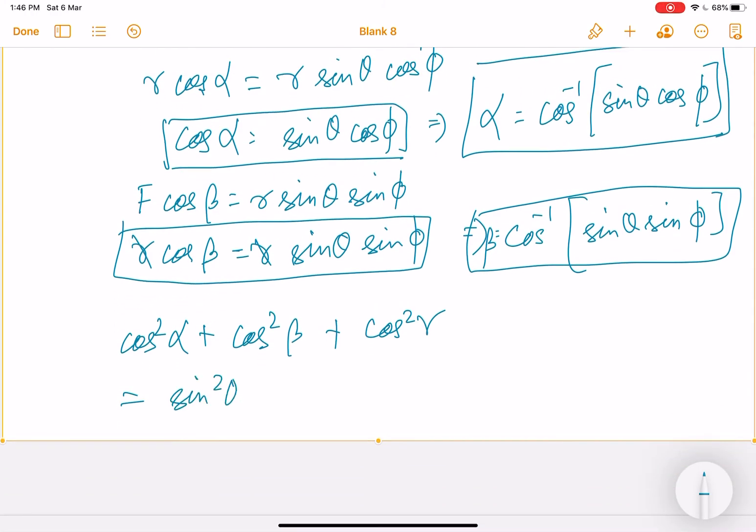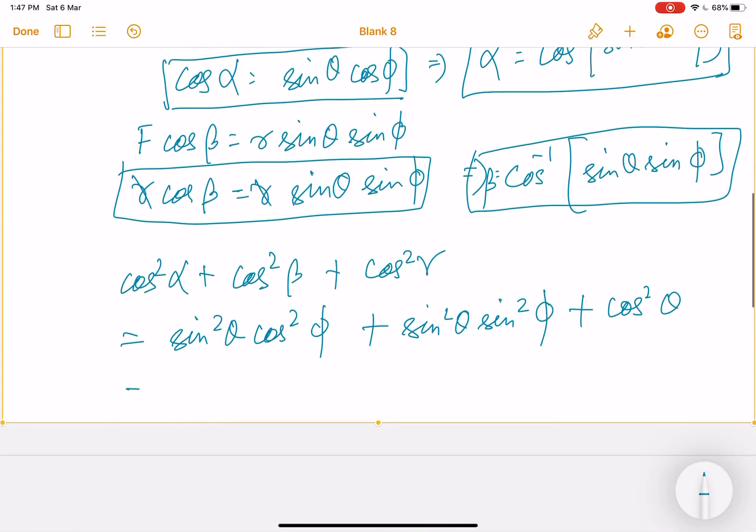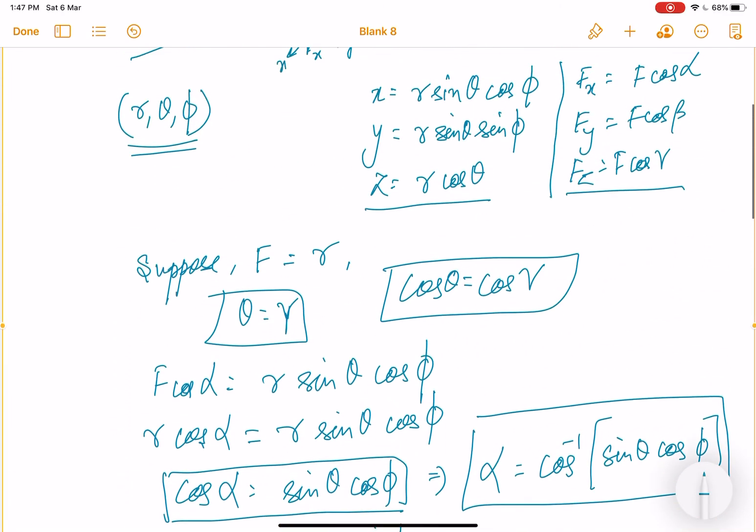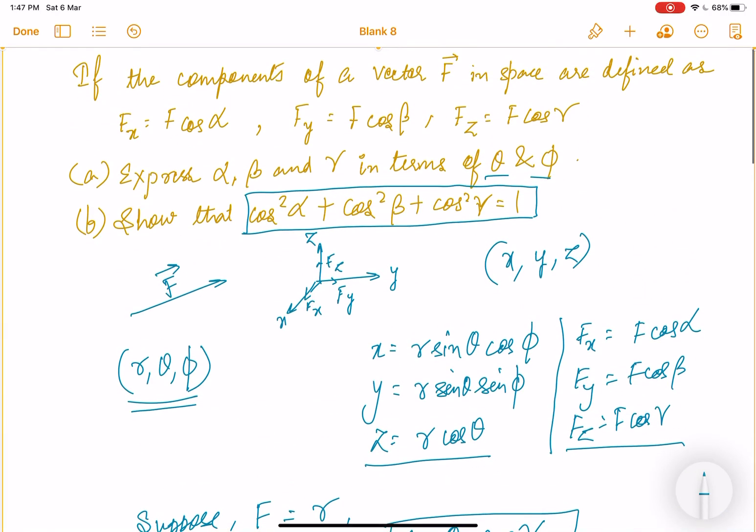So it will be sin square theta cos square phi plus sin square theta sin square phi plus cos square theta. Taking these two terms common, it will be sin square theta times cos square phi plus sin square phi, plus cos square theta. So this is 1, so then I got sin square theta plus cos square theta, which is again 1. So basically we proved this. Since this is also proved, this assumption that I have taken is justified. If you have any other method to solve this question, do write it in the comment section. Thank you.